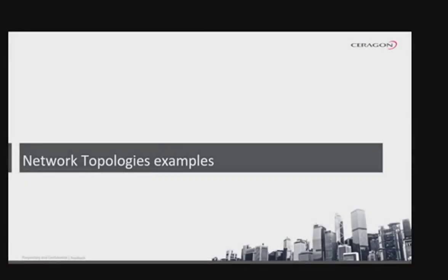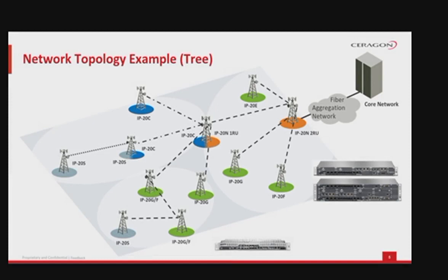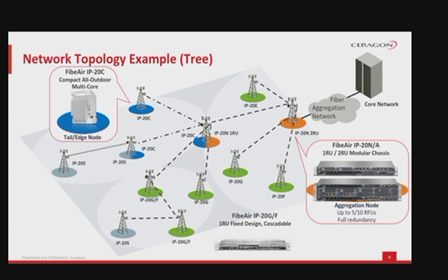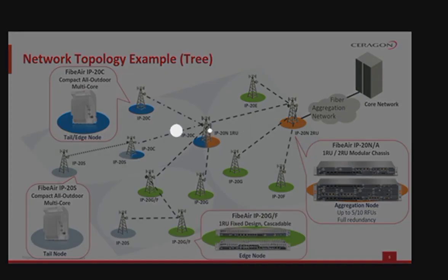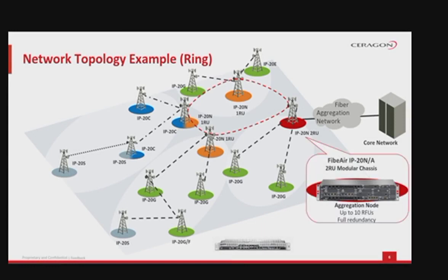The following slides show some network topology examples and the recommended places to deploy different Saragon products. The IP20 family constitutes a single platform serving all radio transport technologies in any topology and any installation configuration. A typical tree network topology provides the highest capacity using IP20N, while in a typical ring network topology, where high capacity and high availability are required, it is recommended to deploy IP20N indoor units.